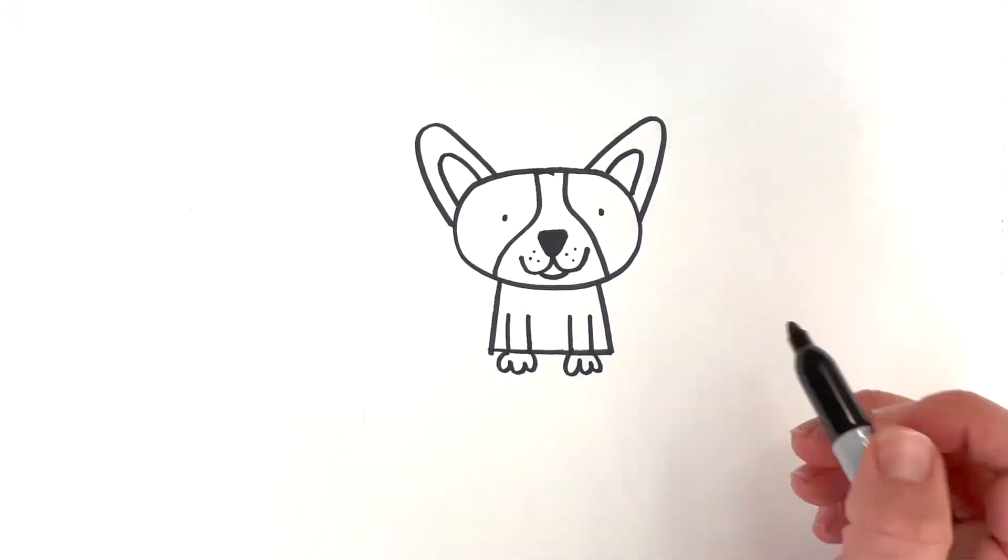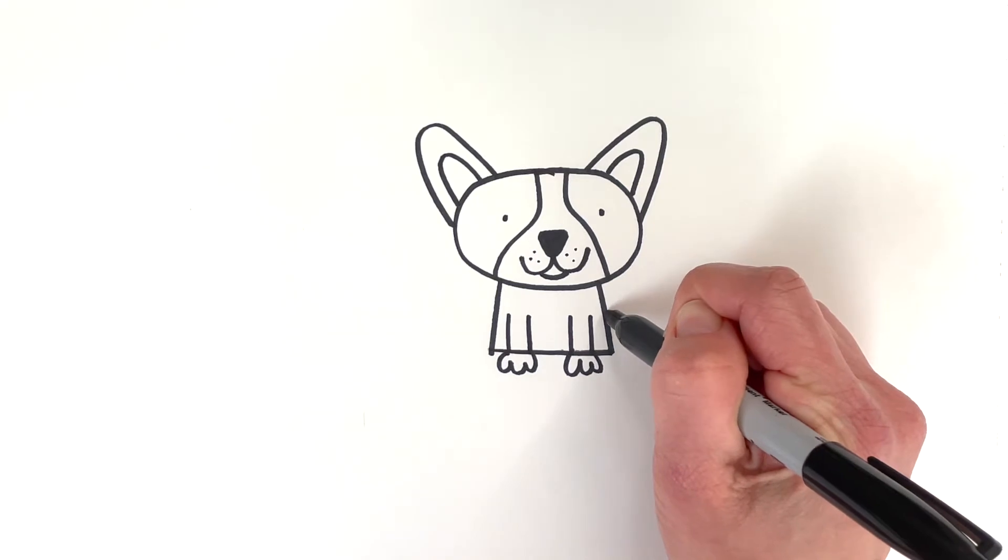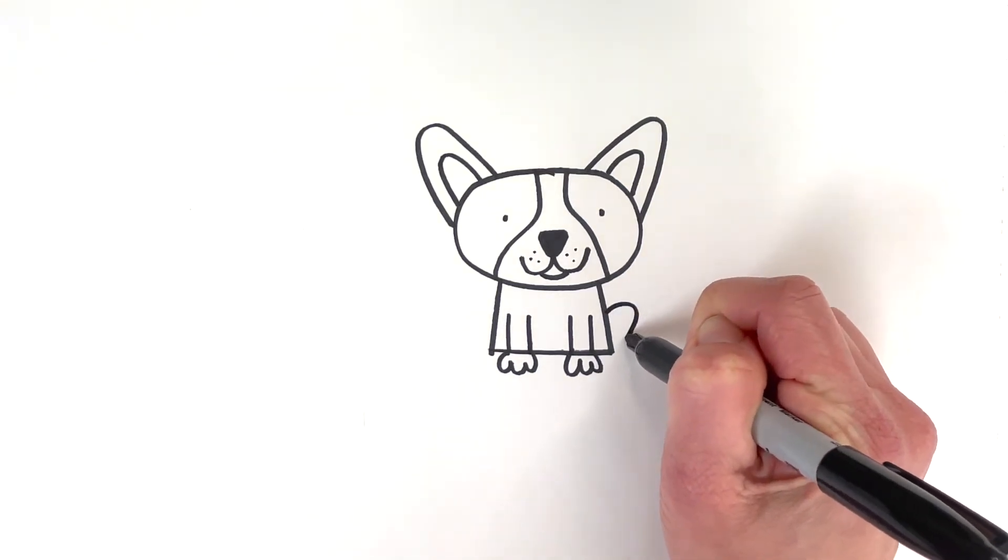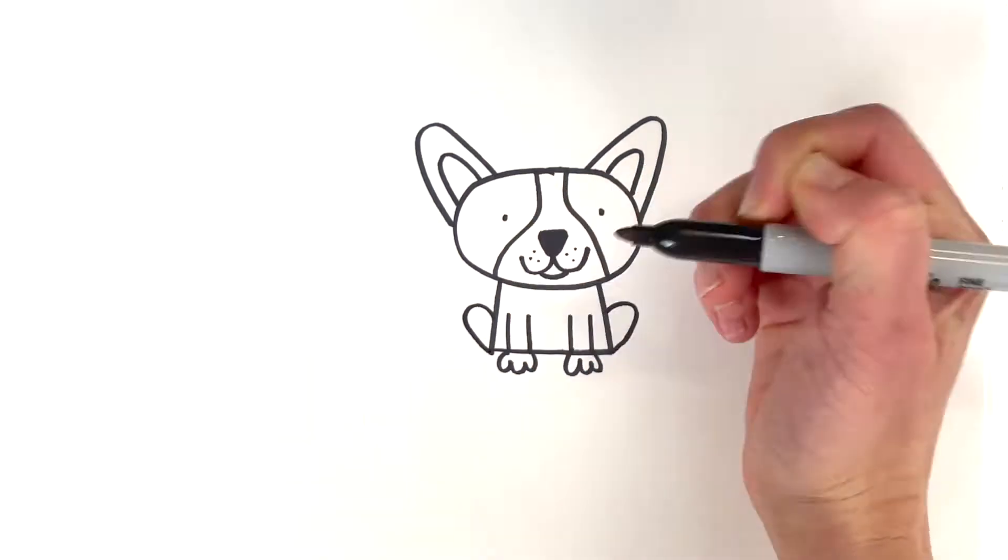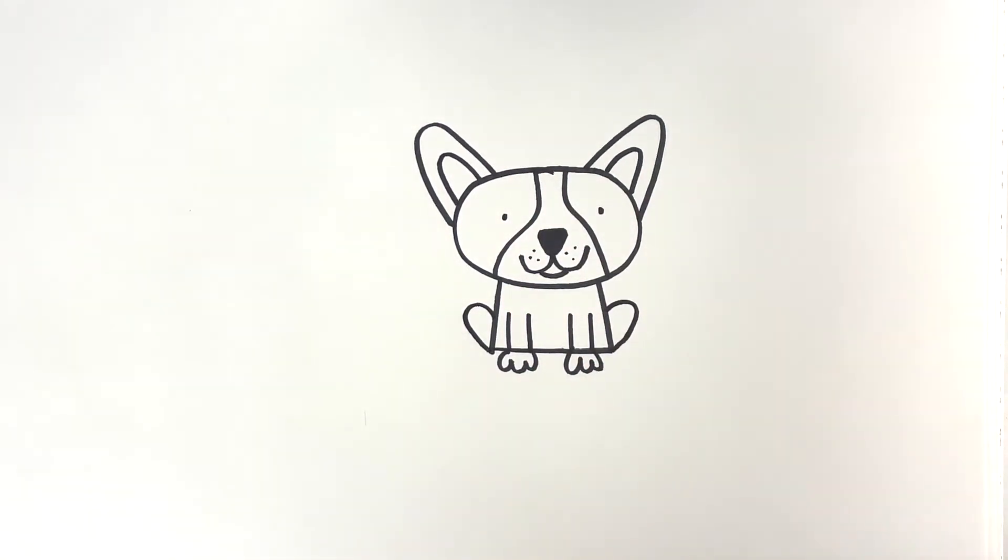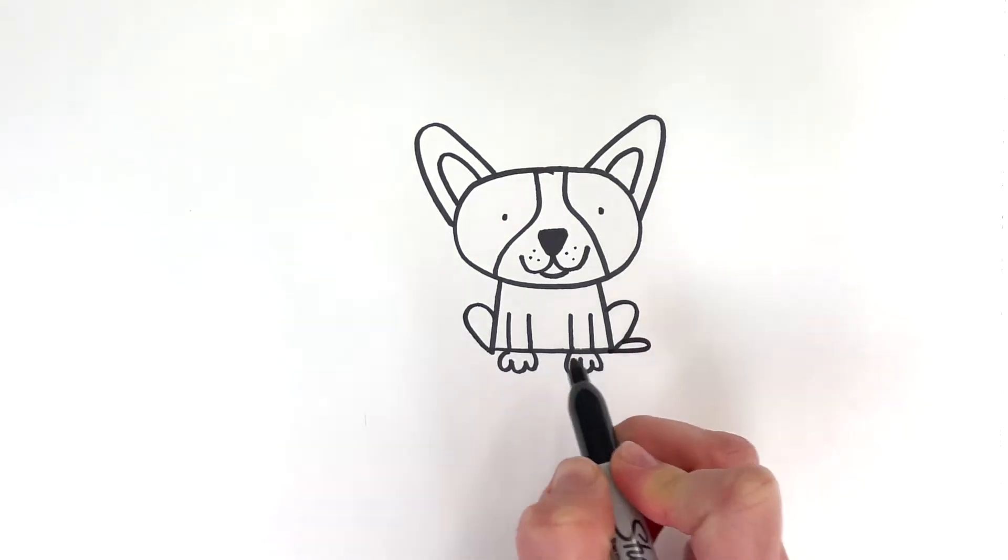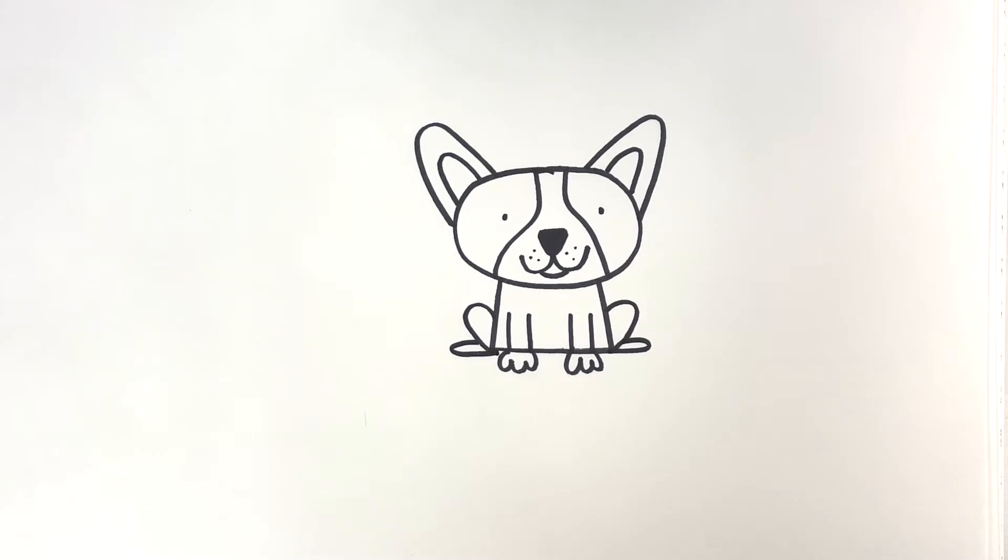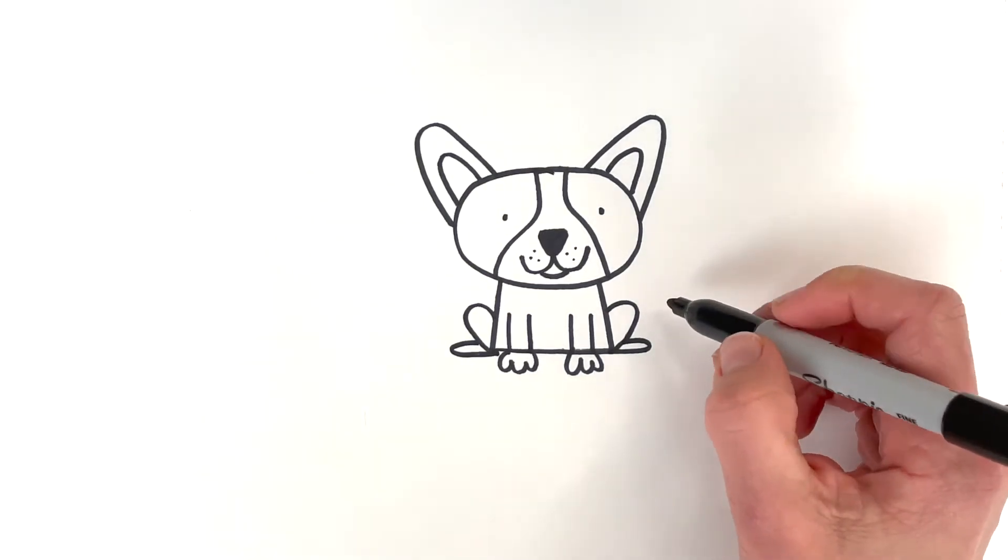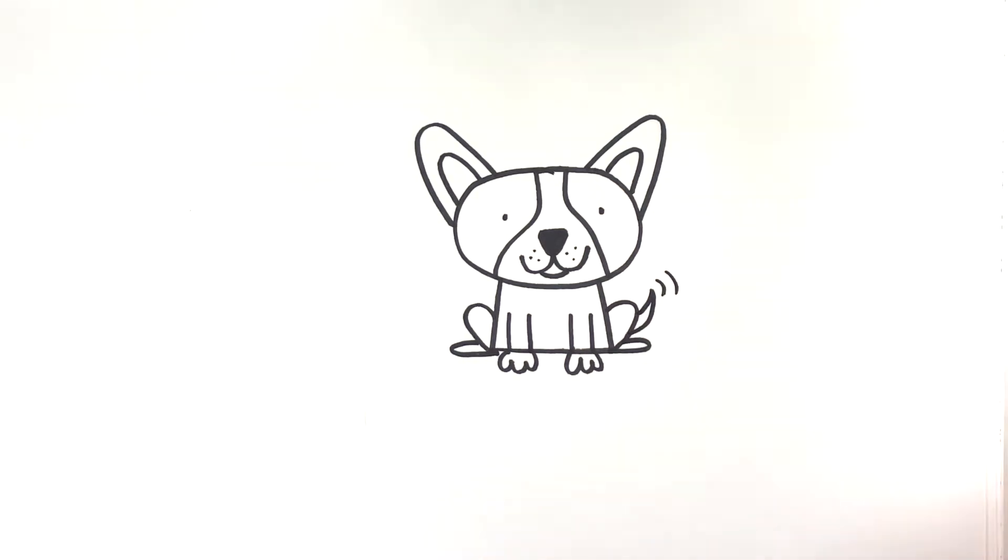Okay, so for the legs, I can kind of just, the back legs, I can tuck them in like kind of like this. But we need his feet. So I'm just gonna draw feet coming like that. Cute! And then how about maybe there's a little tail back there, wagging.